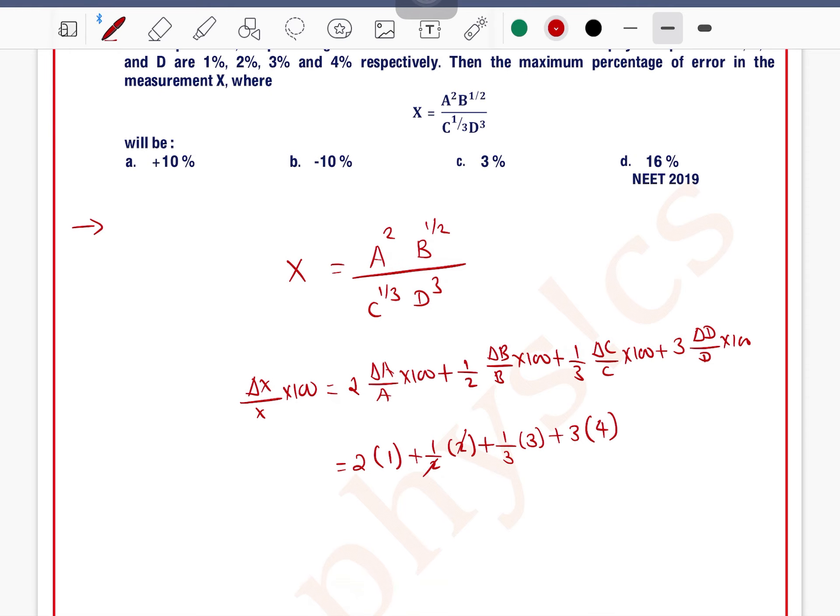So here 2, 2 cancel, 3, 3 cancel, 2 plus 1 plus 1 plus 12, that gives